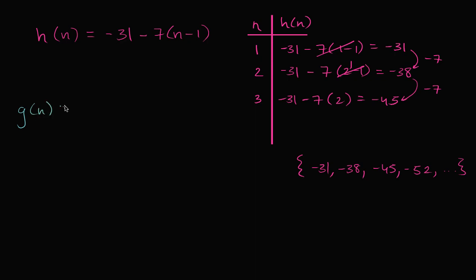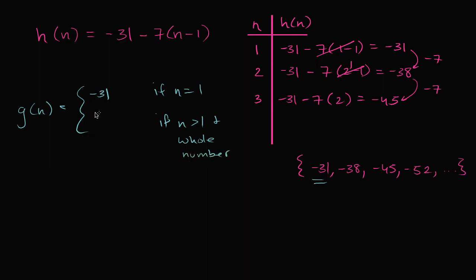Let's call it g of n. A recursive function is easier in some ways. If n is equal to one, g of n is going to be negative 31. And if n is greater than one and a whole number — this is defined for all positive integers — it's just going to be the previous term: g of n minus one, minus seven. We look at the previous term and subtract seven, tracing back through previous terms all the way to the base case when n equals one, and you get this exact same sequence.